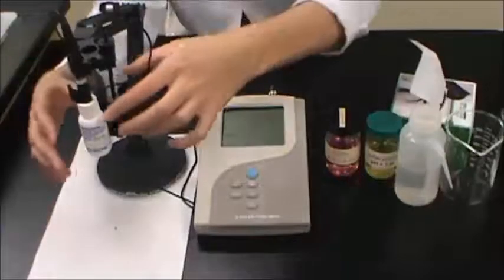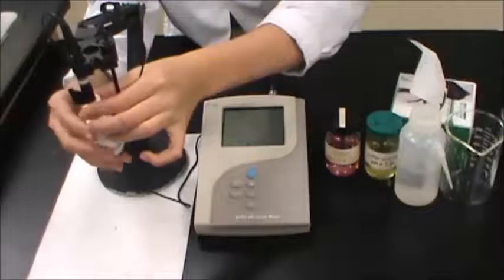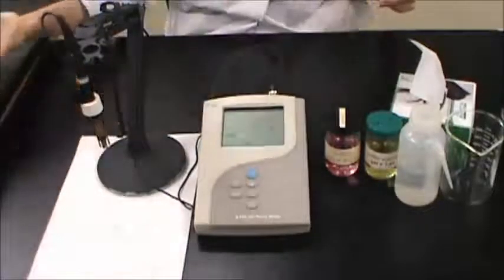Remove the bottle of electrode storage solution from the end of the pH probe and rinse both probes with deionized water. Then blot them dry with a kim wipe.